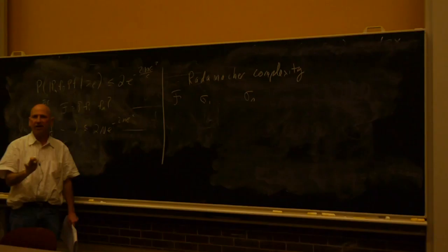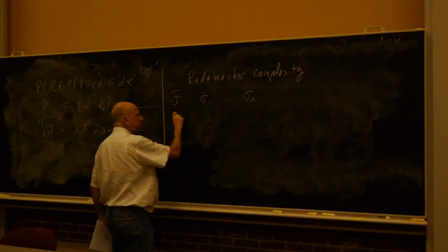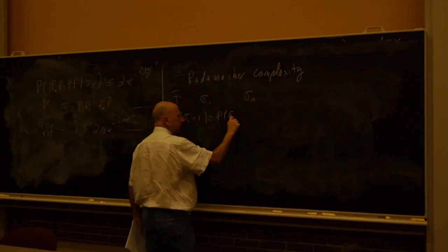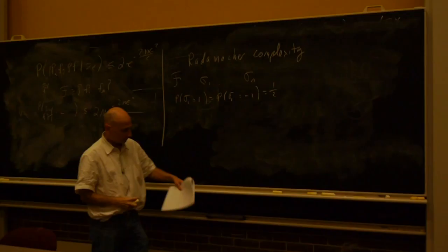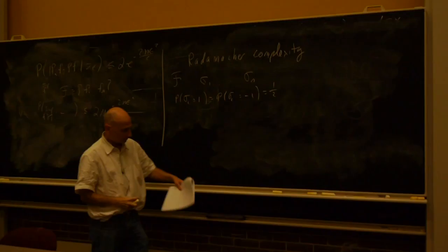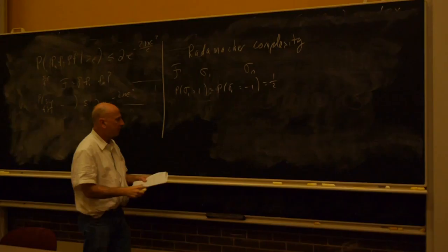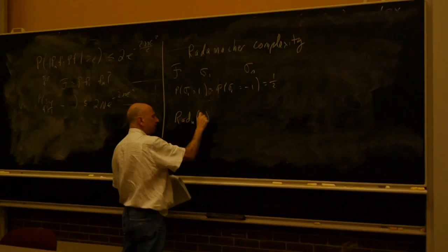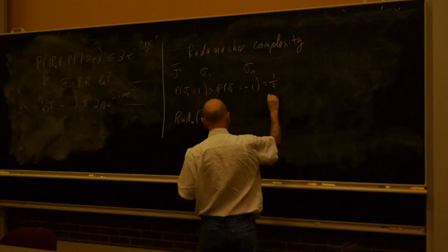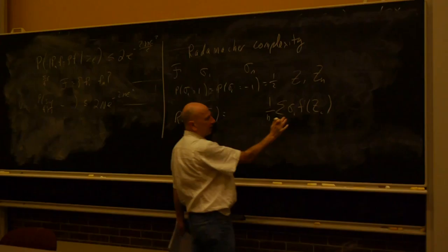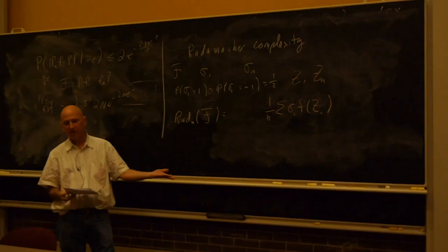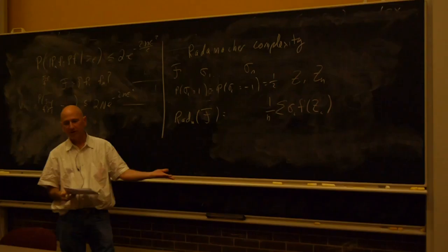What is it? We introduce random variables sigma 1 to sigma n, independent of everything else in the problem. A Rademacher sequence means these are independent random variables that can only take two values, plus 1 and minus 1, with equal probability — like Bernoullis but ±1 instead of 0 and 1. The Rademacher complexity of a class of functions f is defined as follows. We have random variables z_1 to z_n. You take a function, evaluate it at the data, multiply by the randomly generated Rademacher variables, and take the average.